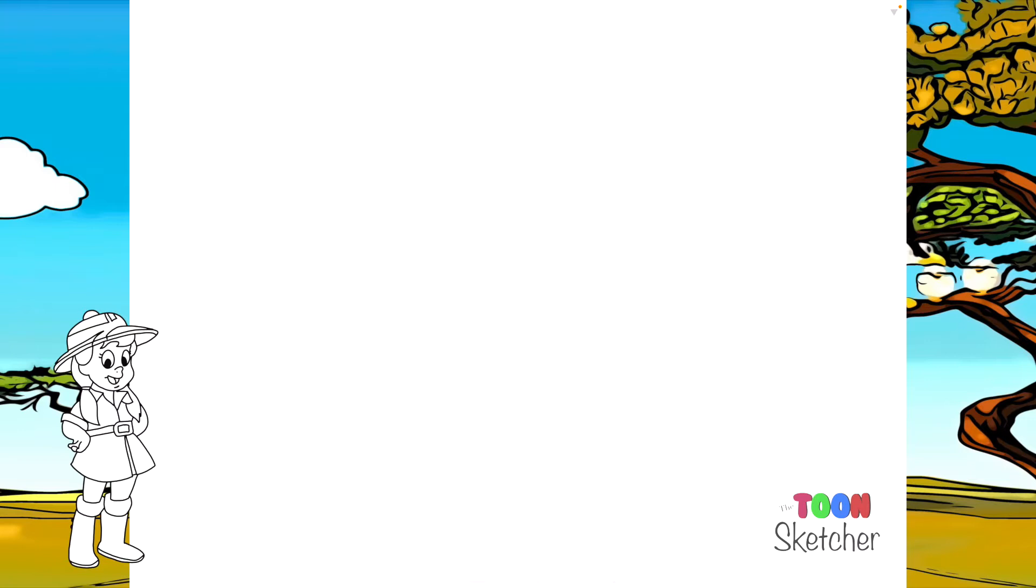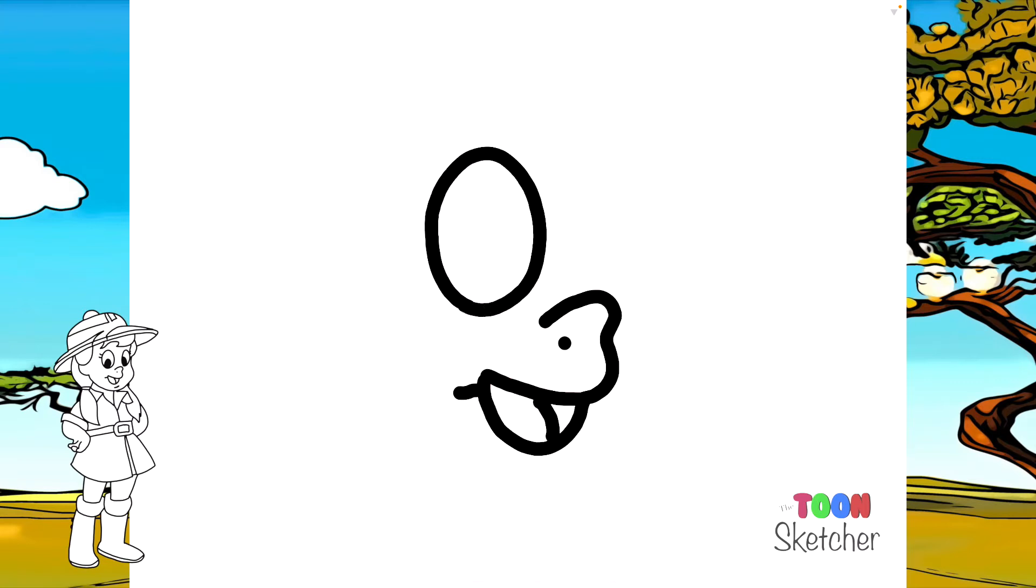So I'm going to go ahead and start off with her nose. Her nose is around right here. Then you can go right into her mouth and give her tongue a little detail. We'll start off with her right eye and her left eye is right here. We'll give Rhonda some eyelashes.